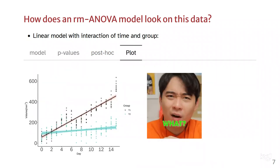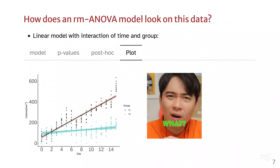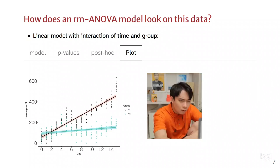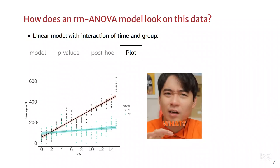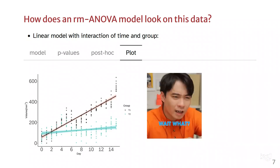But what if we actually plot the model over the data? Here we can see that the model are the two lines we see, one line for each group, but the points are not following that line. The model is not following the trend of the data. Especially at day 15, notice that for group 1 it's fairly off. What's going on here?